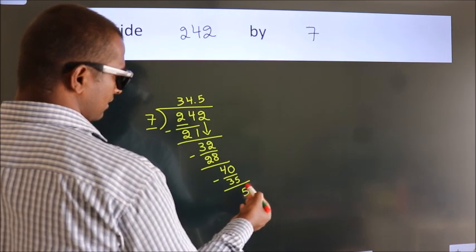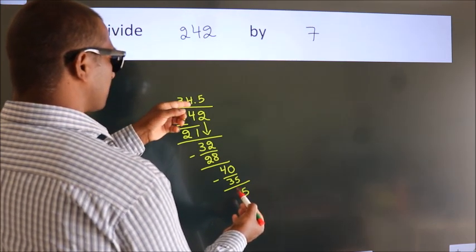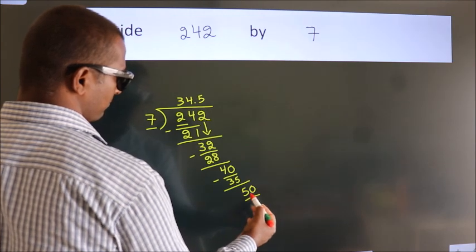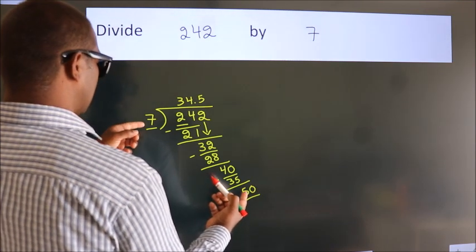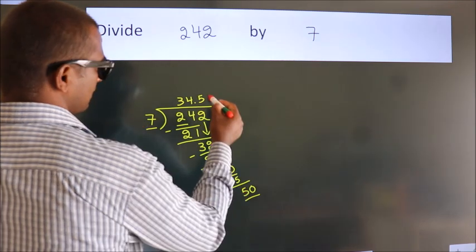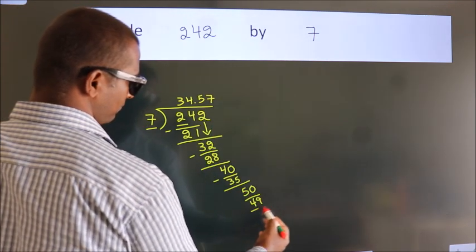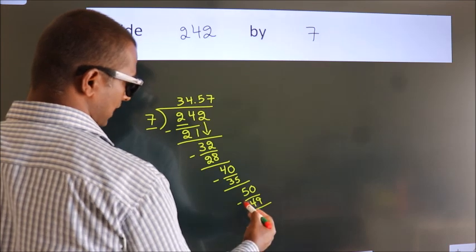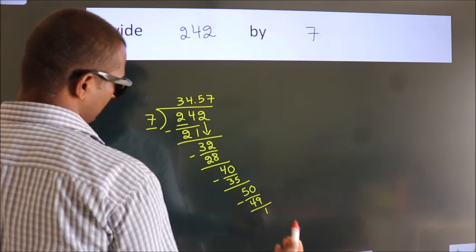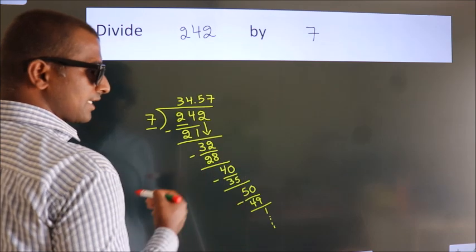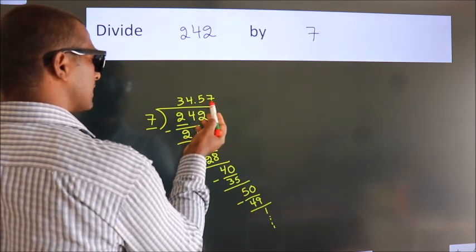After this, we already have the decimal, so directly take 0. So 50. A number close to 50 in the 7 table is 7 sevens, 49. Now we subtract. We get 1. And the division continues. It is enough if we do up to 2 decimal places.